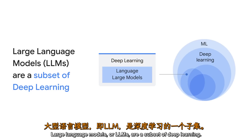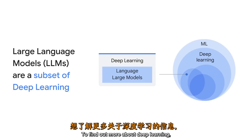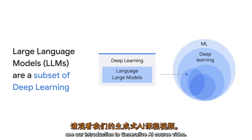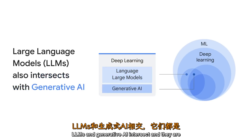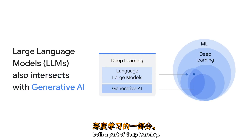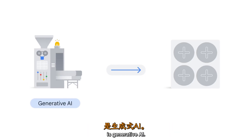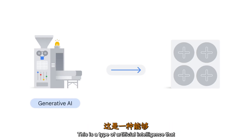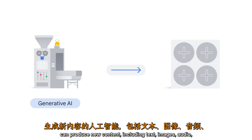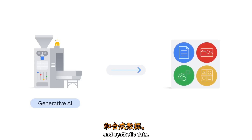Large Language Models, or LLMs, are a subset of deep learning. To find out more about deep learning, see our Introduction to Generative AI course video. LLMs and Generative AI intersect, and they are both a part of deep learning. Generative AI is a type of artificial intelligence that can produce new content, including text, images, audio, and synthetic data.